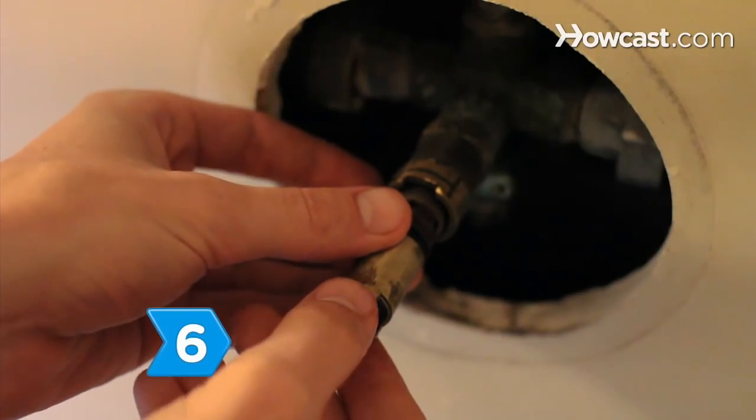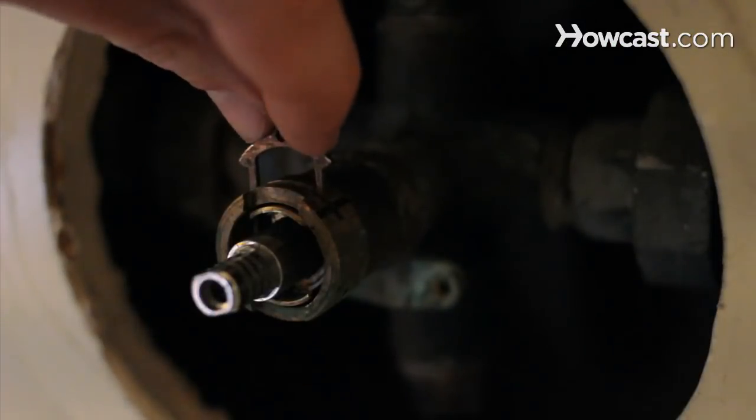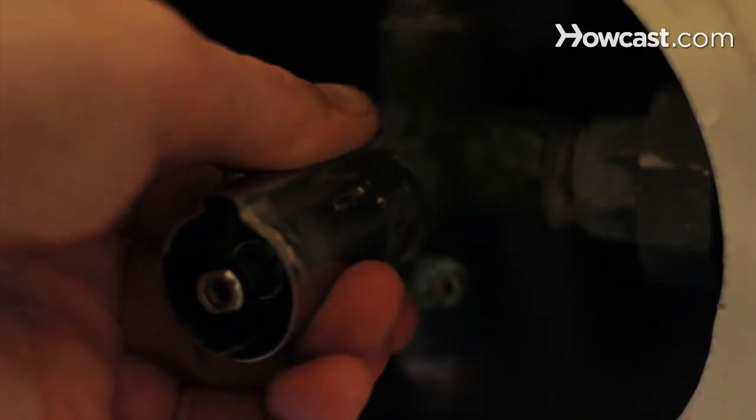Step 6. Replace the damaged parts, reassembling the faucet valve with the new parts in the opposite order in which you took it apart.